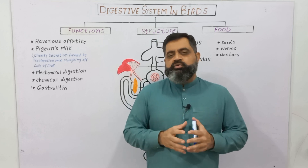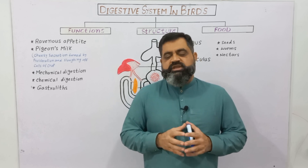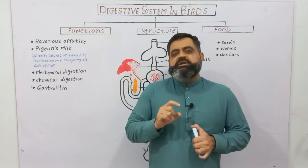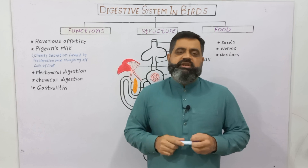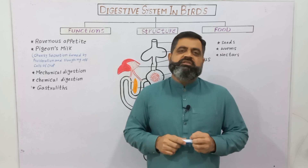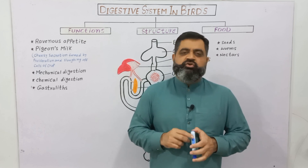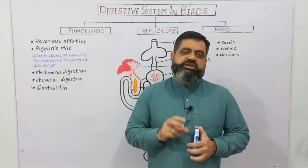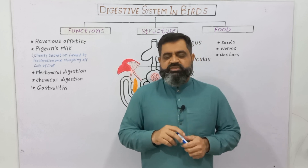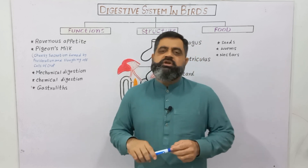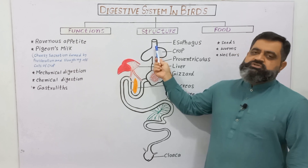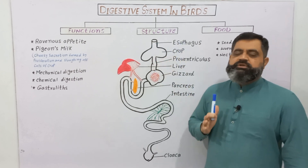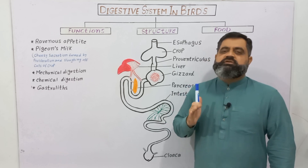A beak does not contain any teeth, so birds do not grind food in the mouth. They do contain a tongue in the oral cavity which helps to swallow the food. When they swallow the food, it enters a small tube known as the esophagus. The esophagus does not help in the process of digestion; rather, it transports food from the oral cavity into the crop.